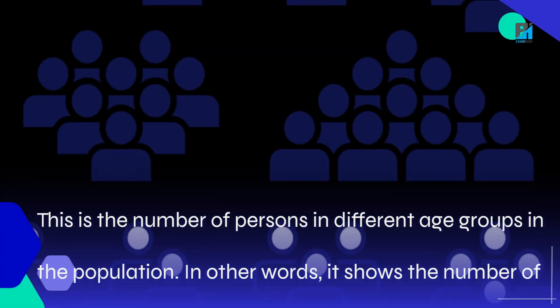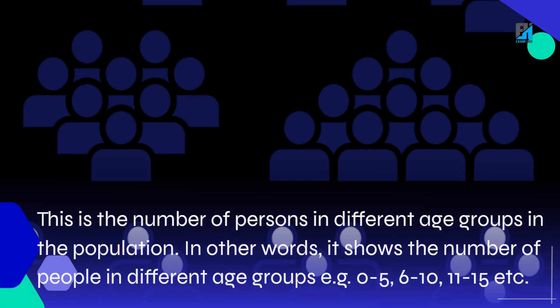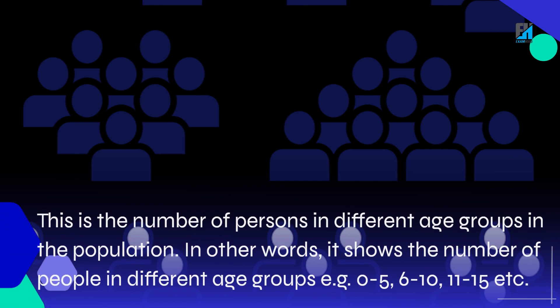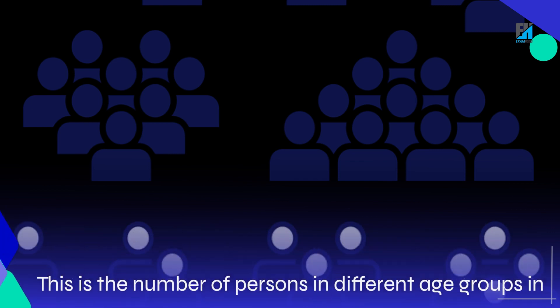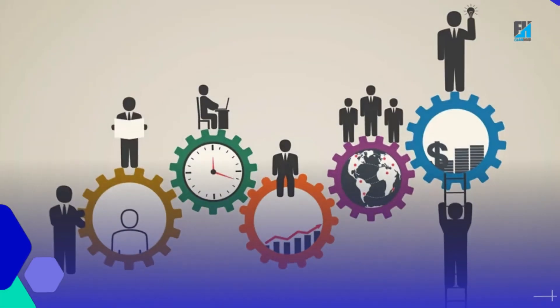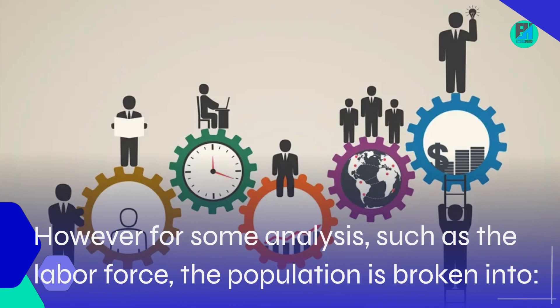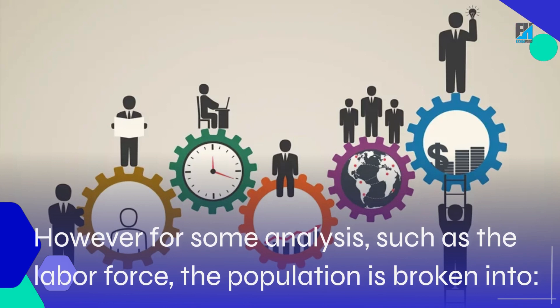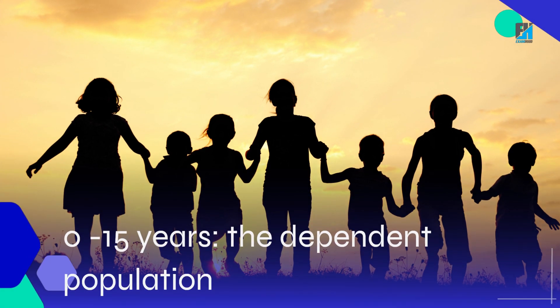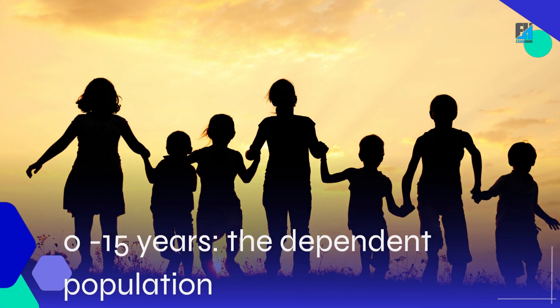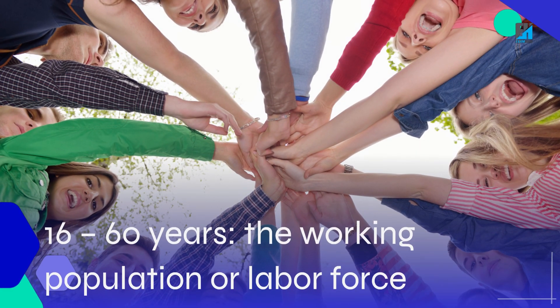Age distribution is the number of persons in different age groups in the population. In other words, it shows the number of people in different age groups — for example, 0 to 5, 6 to 10, 11 to 15, and so on. However, for some analyses such as the labor force, the population is broken into 0 to 15 years, and 16 to 60 years.